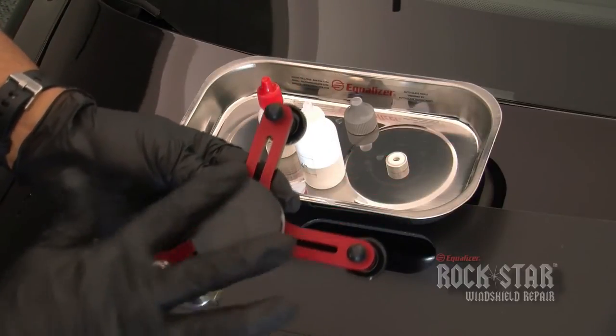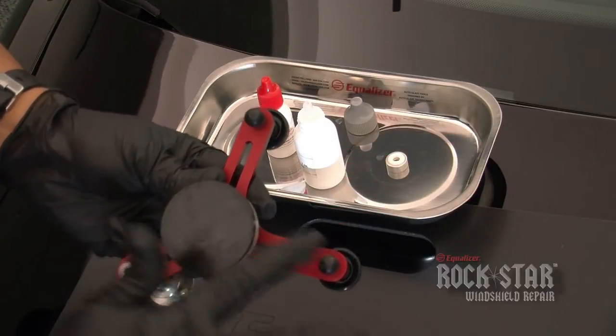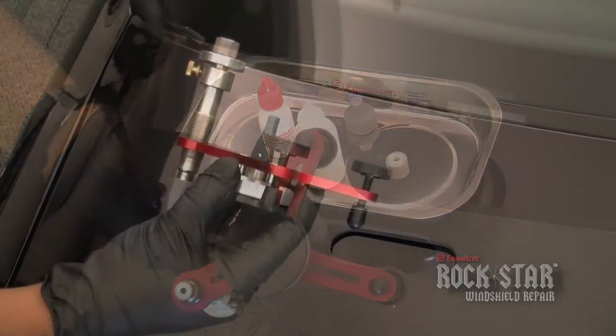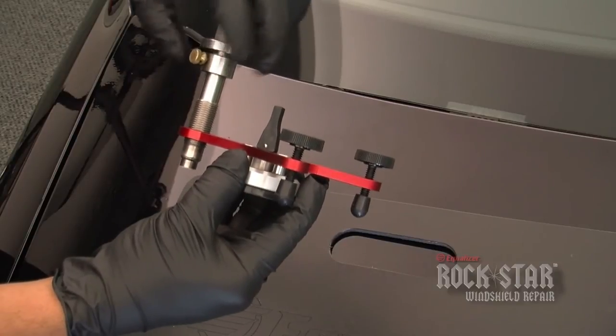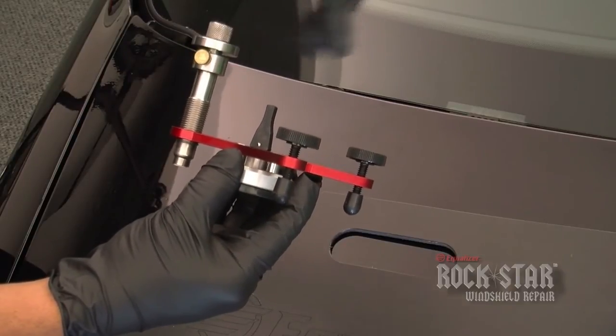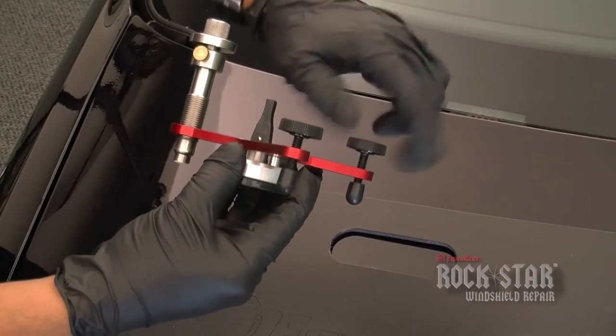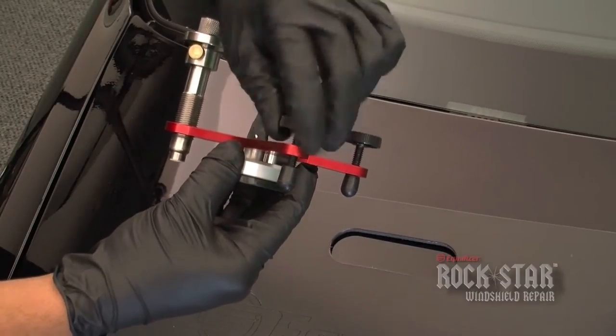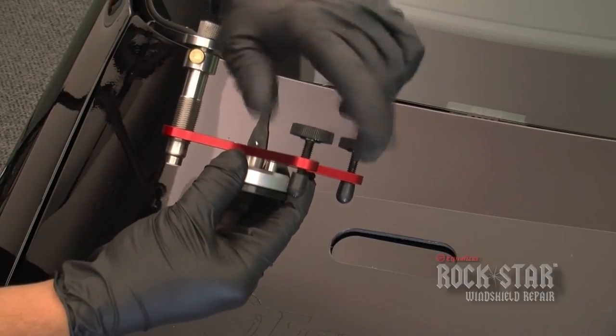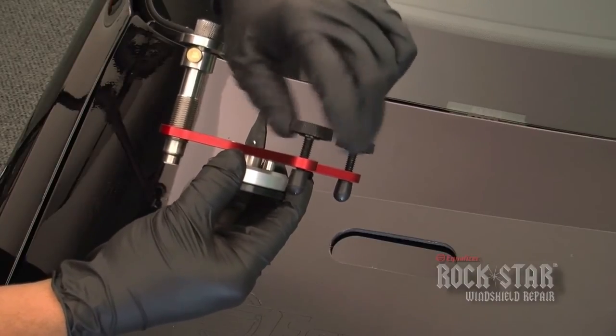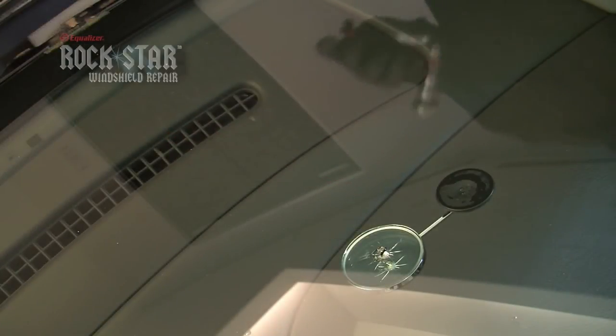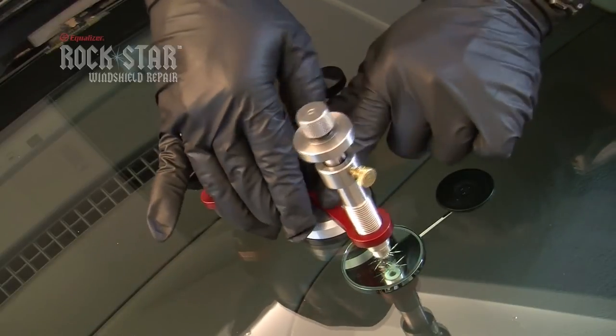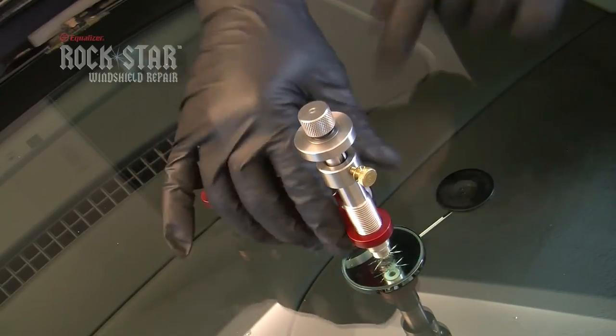Once the bridge and injector assembly is set up on the glass, this will help to move the unit if the o-ring placement needs to be adjusted. Make sure that the injector assembly and bridge adjusting screws are backed out enough so that they do not make contact with the glass until the vacuum cup is fully engaged on the glass. Place the bridge and injector assembly onto the glass so that the injector tip o-ring is over the rock chip. Secure the bridge by flipping the vacuum cup lever.